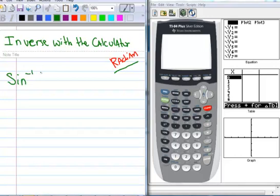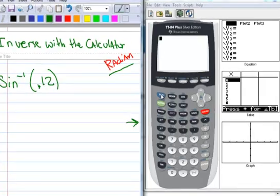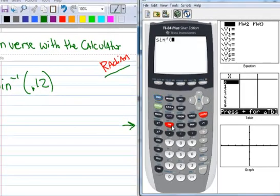So let's do the inverse sine of 0.12. You'll notice that above your sine, cosine, and tangent buttons are the inverse sine, inverse cosine, and inverse tangent buttons. So let's do this first one, second sine. See how I get the inverse sine? 0.12. Close my parentheses. And 0.120 something. Okay, let's do another one.